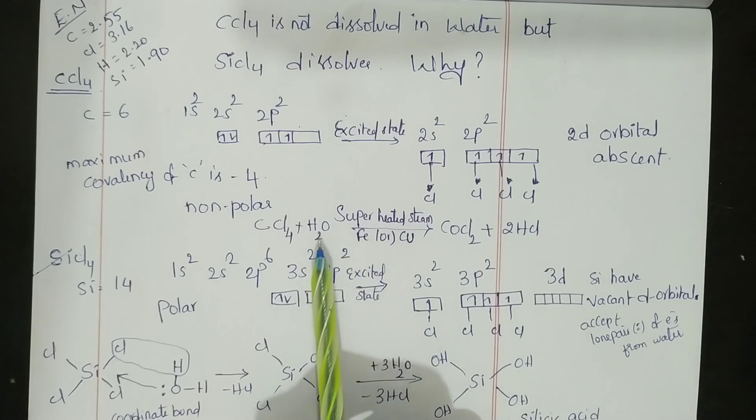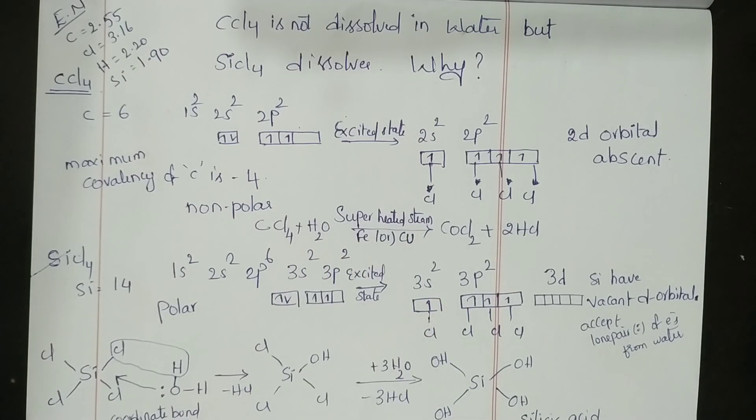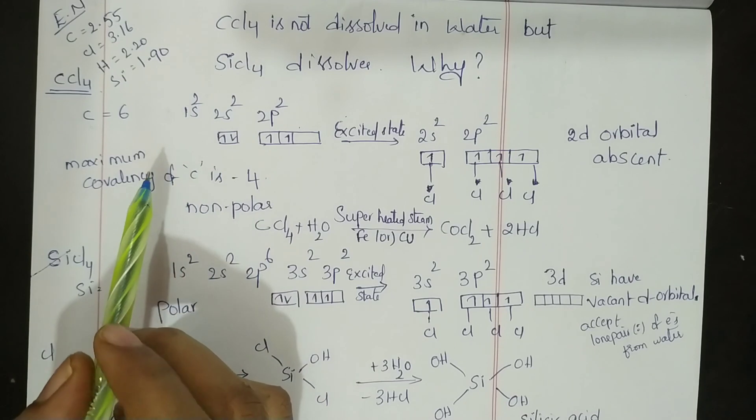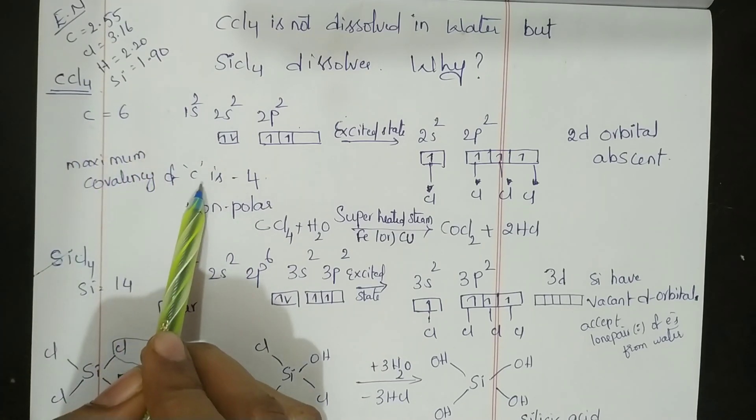We all well know that carbon has a maximum covalency of four. Here carbon is already bonded with four chlorine atoms.